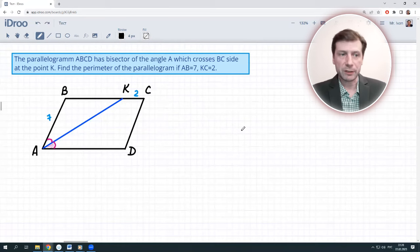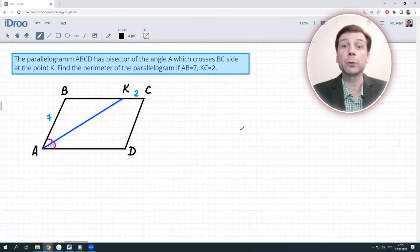We have parallelogram ABCD. It has an angle A bisector which crosses BC side at point K. We should find the perimeter of the parallelogram if AB is equal to 7 and KC is equal to 2.